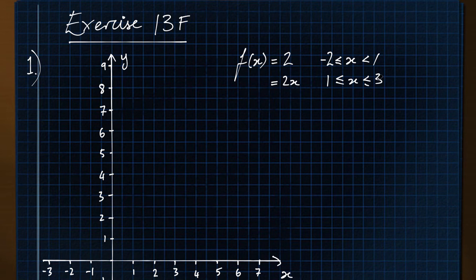It's always worth working out before you start what your y is going to be. Throughout this I've got pre-prepared axes, but we don't really need axes that go to this distance for each graph. So just looking at the minimum value, when x is minus 2, y equals 2. So our range here is y from 2 to, when x is 3, y equals 2x, so 6. So y is from 2 to 6.